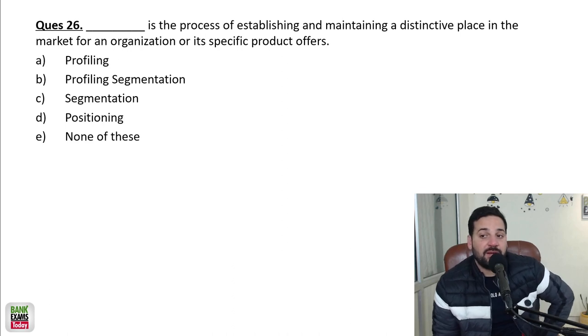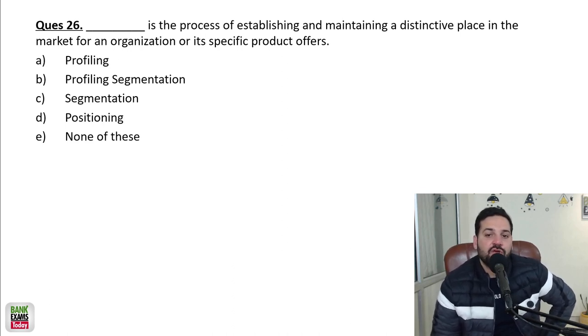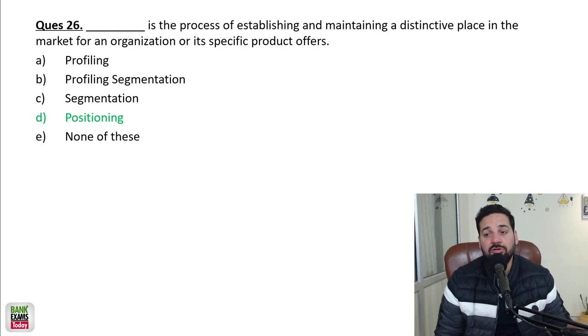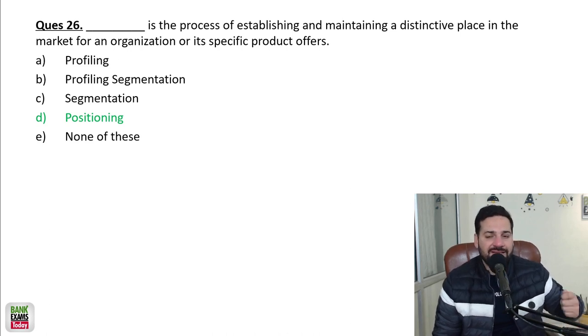Positioning is the process of establishing and maintaining a distinctive place in the market for an organization or its specific product offers. Maintaining a distinctive place, that is market positioning. So positioning is a process by which, with the help of positioning, you are going to make or establish a distinctive place in the market for yourself.